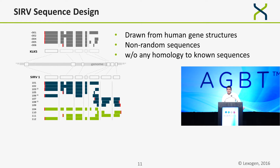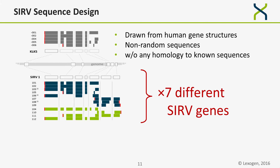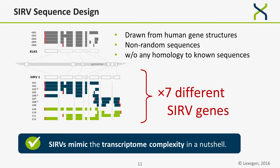I'll give you one example. SERVs are modeled on the human gene structure. SERV1 is modeled on KELKEL5. You can see the grey exon structure of these annotated genes, and this is rebuilt in SERV1. We added additional features — in this case, overlapping gene regions and antisense transcripts — all built in times seven across the seven genes. This allowed us to mimic the entire complex transcriptome complexity in a nutshell. The sequences are not random, but they have no homology whatsoever with any known sequences, so they are compatible with any organism.